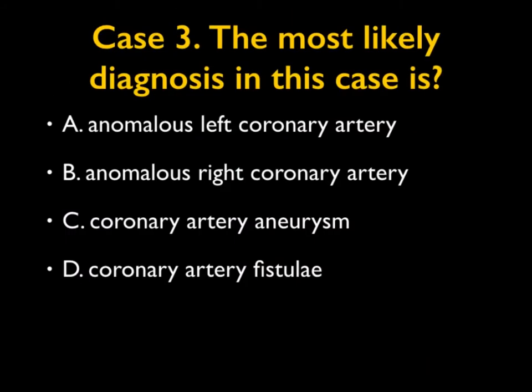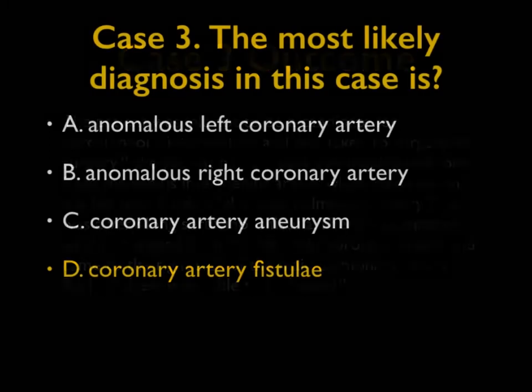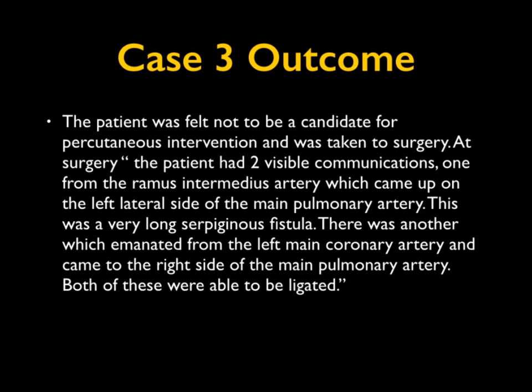Think about that for a second. The first question is simple: what's the best diagnosis? Thinking about it — it wasn't an anomalous left coronary, and it wasn't an anomalous right coronary. It wasn't an aneurysm, but it was a fistula. That was the unusual example of a coronary artery fistula. The patient went to surgery. The patient had two visible communications: one from the ramus intermedius artery, which came up on the left of the main PA, and another from the left coronary and one on the right side. That explains the two vessels and the button appearance. This was ligated and the patient did great.